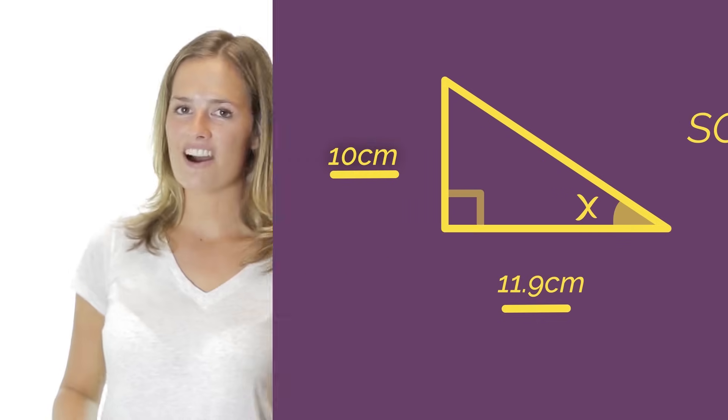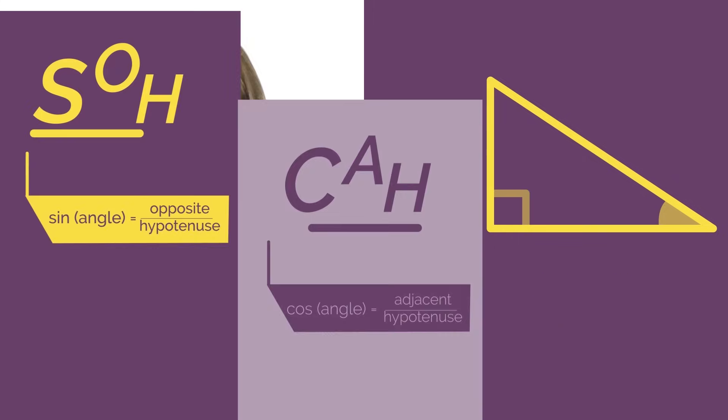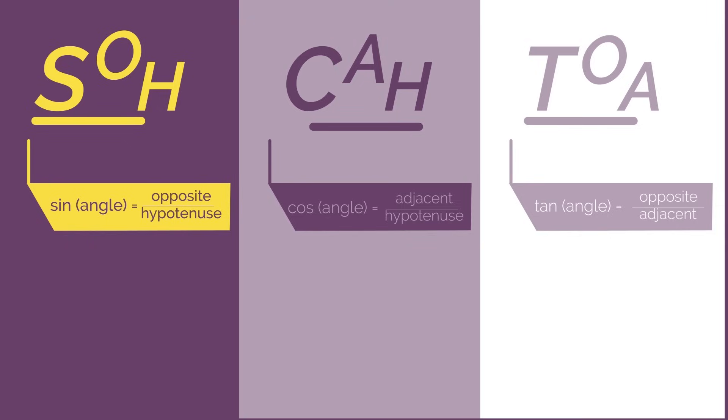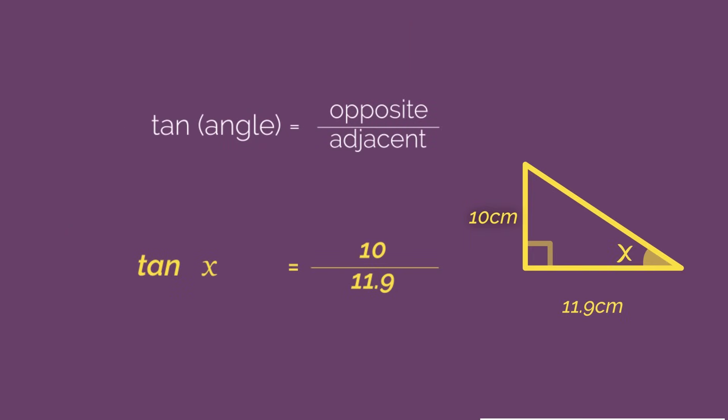With opposite O and adjacent A, should we use sine, cos or tan? So we need to use tan. So tan angle equals opposite divided by adjacent, and substituting in our numbers we get tan x equals 10 divided by 11.9.